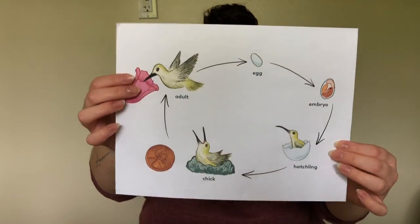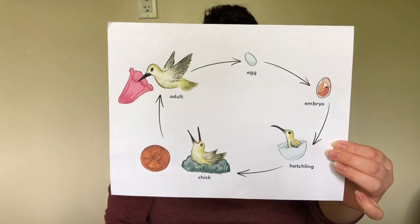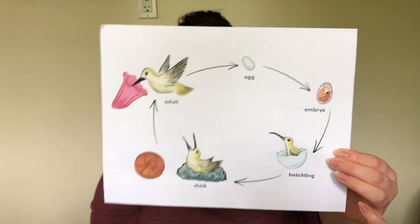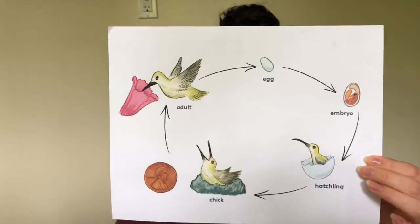First we're going to start with the life cycle of a hummingbird. I'm going to show you a diagram, and it'll help us get an idea of what a life cycle is. Here is a life cycle diagram of the hummingbird.